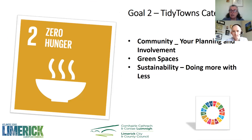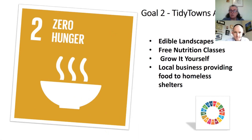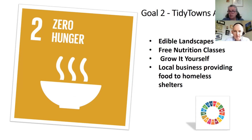Goal 2 is zero hunger. It hits community and planning, green spaces, and sustainability doing more with less. Actions include edible landscapes, free nutrition classes, grow-it-yourself, cookery classes, and local businesses providing food to homeless shelters. We've seen great community garden initiatives and herb gardens made from recycled pallets where people can help themselves — you're doing a bit for your community while ticking one of the goals.